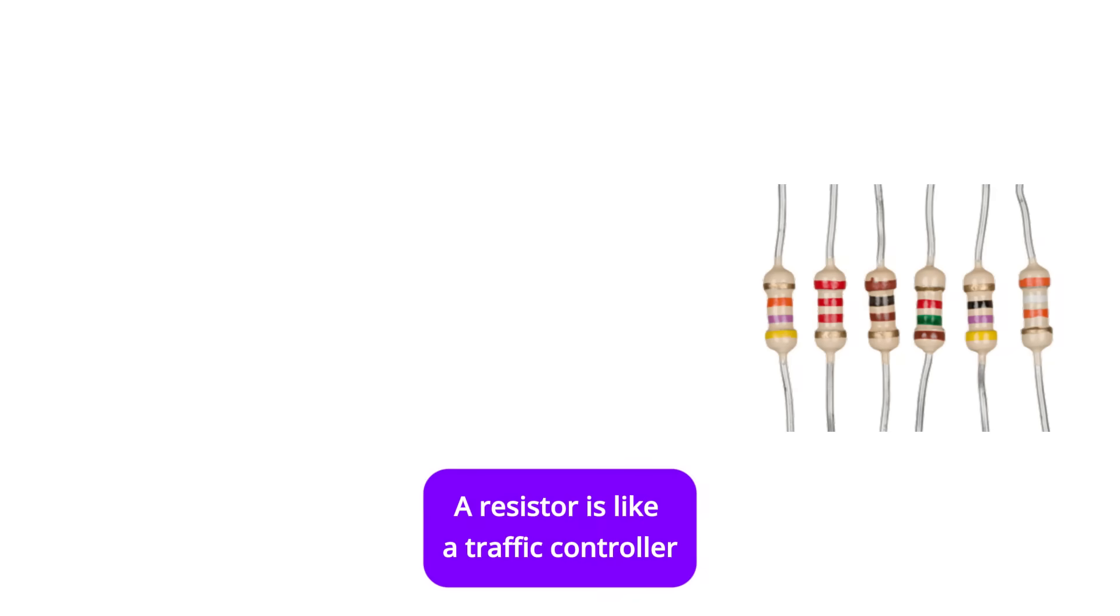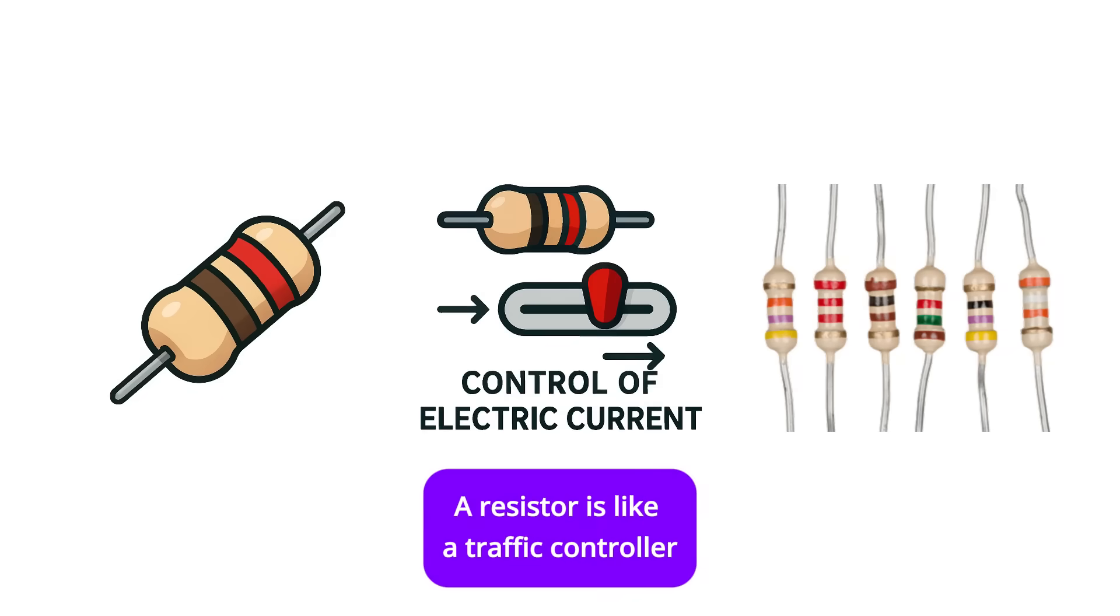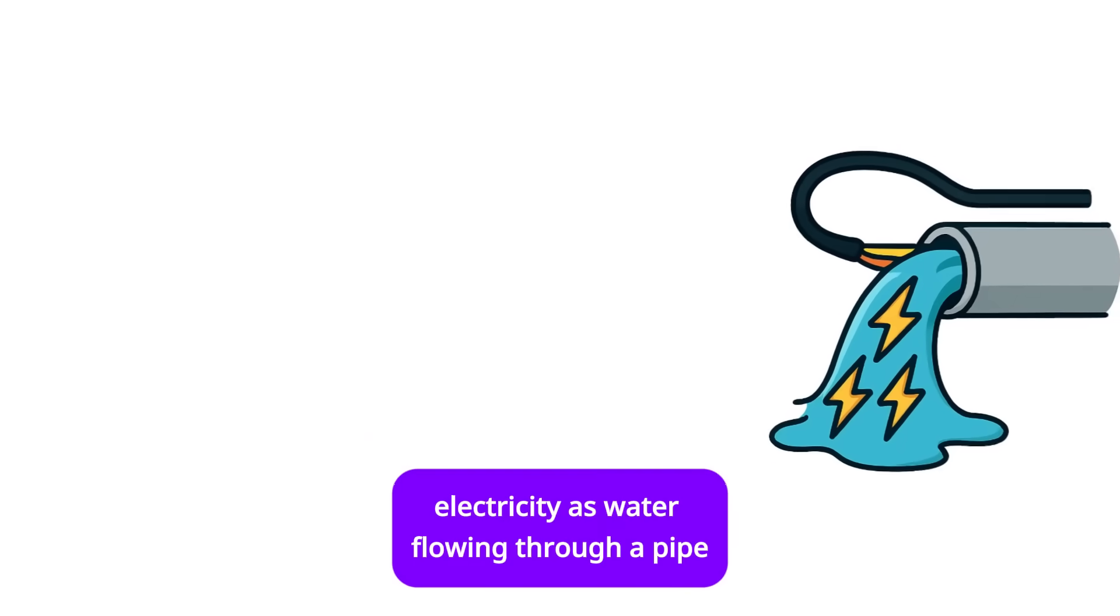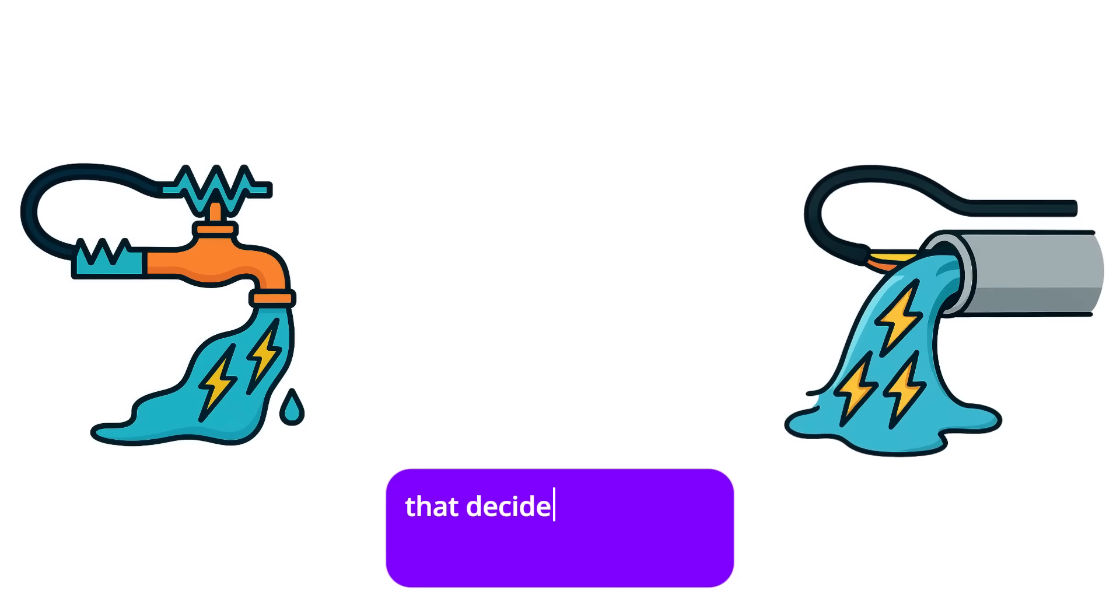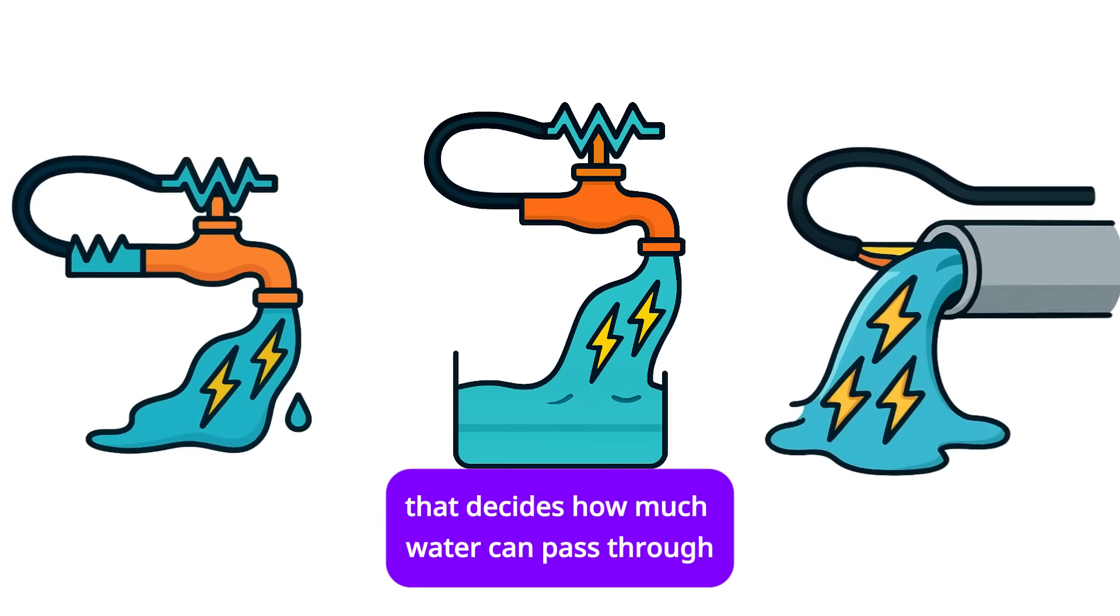Resistor. A resistor is like a traffic controller for electric current. If we imagine electricity as water flowing through a pipe, the resistor is like a faucet that decides how much water can pass through.